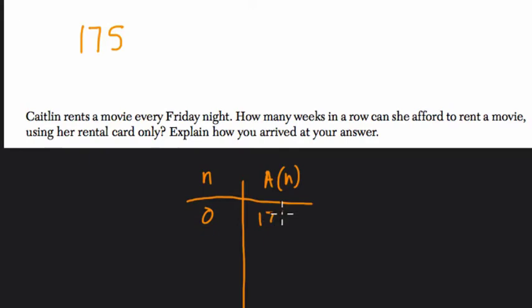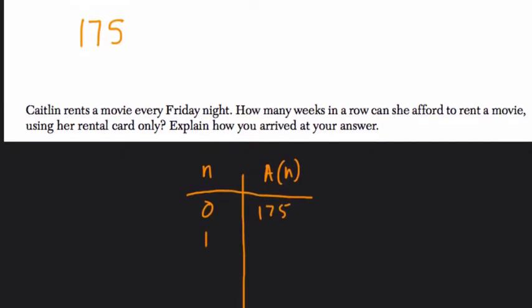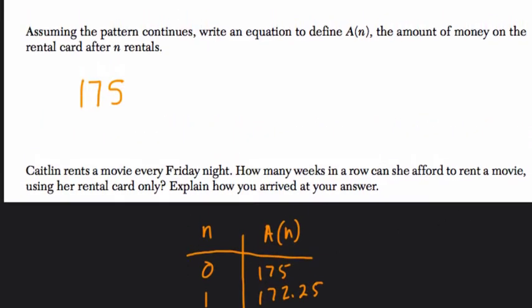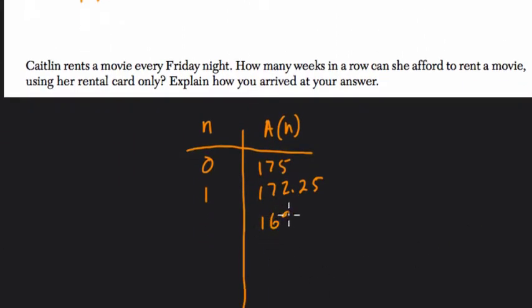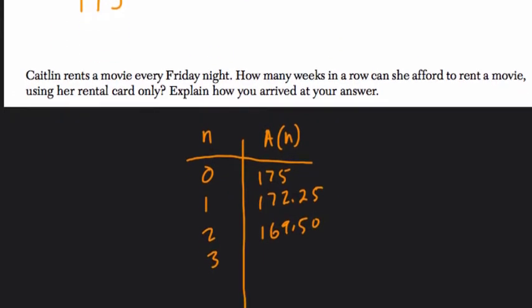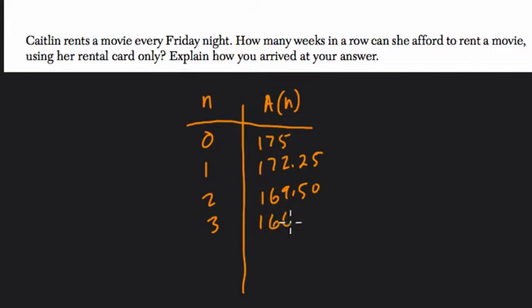With zero movies rented, she had $175. With one movie rented, she had $172.25, I think. Yes, let me check. Yes, and then second movie, $169.50. And then I think they give us the third movie. The third movie is $166.75 left on the card.